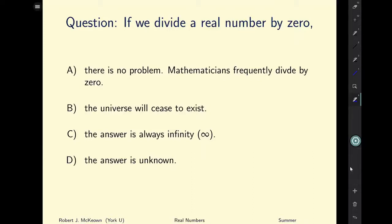If you want to keep thinking about it, hit pause and then I'll walk you through the solution. So is A the correct answer? Well, no, A is not the correct answer. There is a problem and mathematicians do not frequently divide by 0. Will the universe cease to exist? Well, no, that's not a very good answer. You know, if we write down 5 divided by 0 the universe doesn't come to an end.